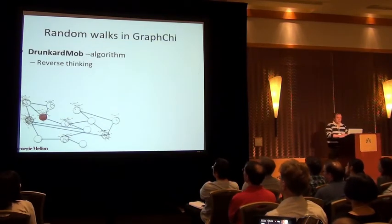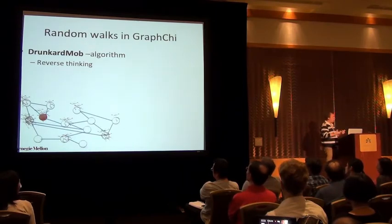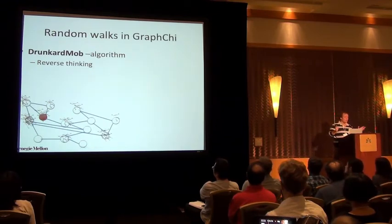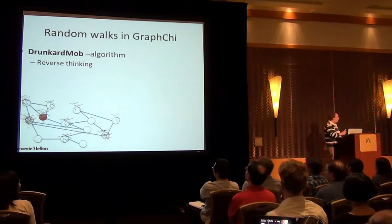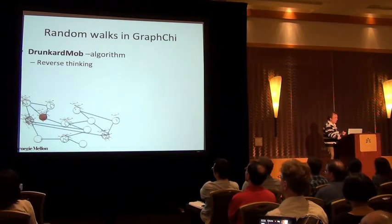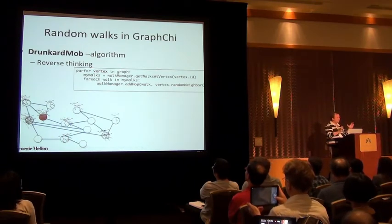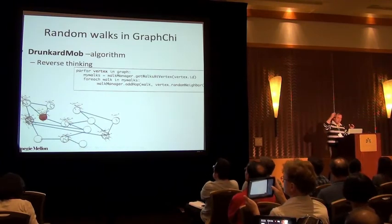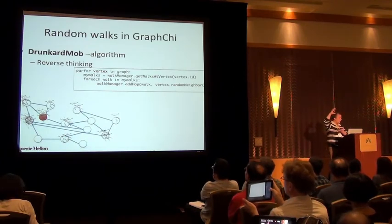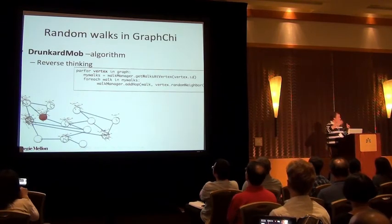So, how we solve this in GraphChi is that we reverse the thinking. Instead of doing one walk at a time, we do billions or millions of walks at a time. And instead of considering one walk at a time, we consider one vertex at a time. So, the idea is that, because GraphChi operates, it loads a block of vertices at a time, and for each block of vertices, it checks which walks are currently at these vertices, and moves them one hop forward.